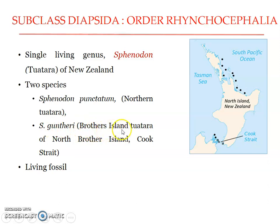Sphenodon guntheri was otherwise known as Brother's Island tuatara of Northern Brother Island, Cook Strait. However, a 2009 paper on the genetic basis used to distinguish the two species concluded that these two species represent only geographic variants, and only a single species is recognized: Sphenodon punctatum. The earlier Sphenodon punctatum is now referred to as Sphenodon punctatum punctatum, and Sphenodon guntheri is now referred to as Sphenodon punctatum guntheri.